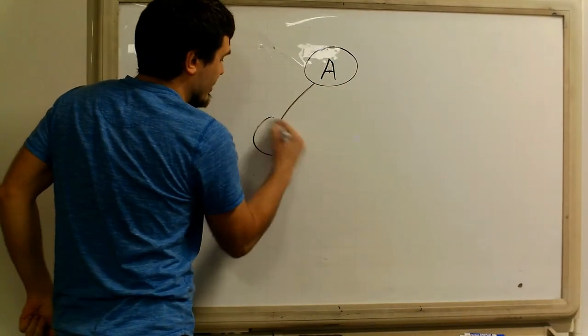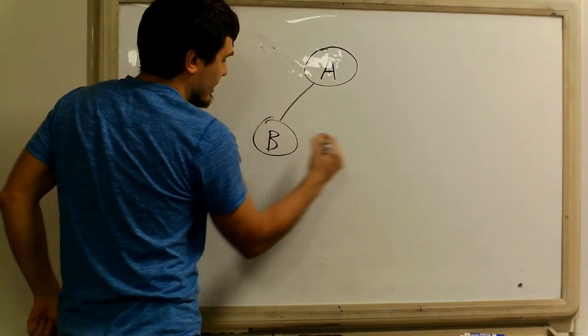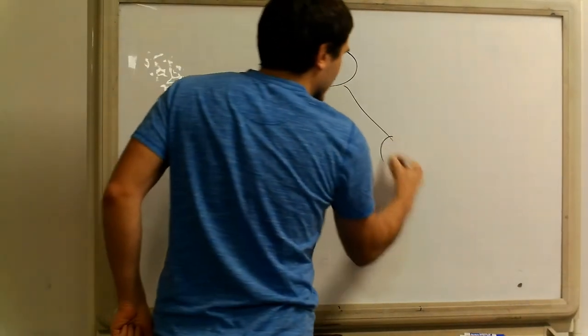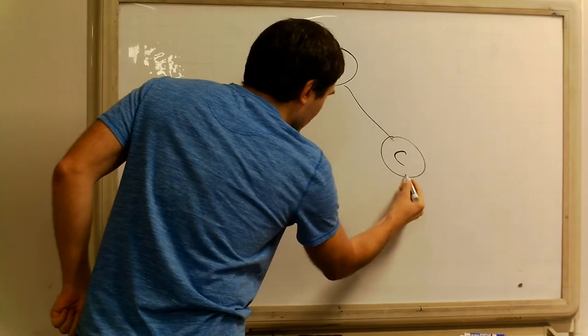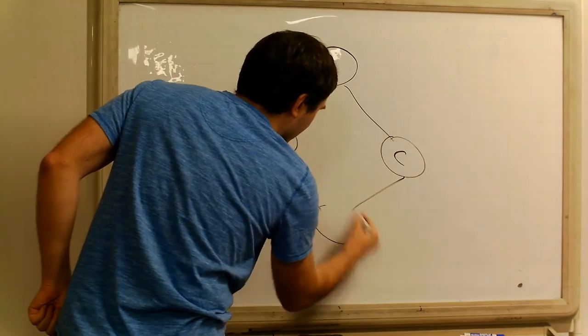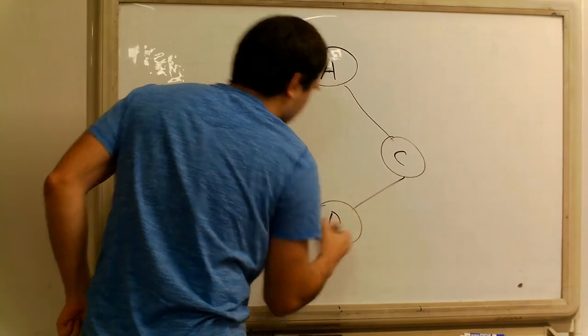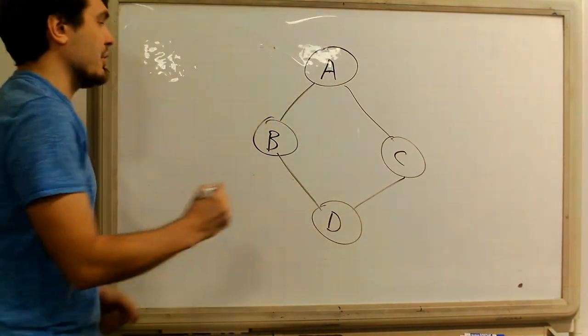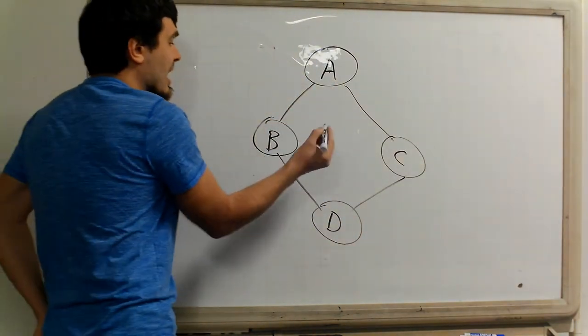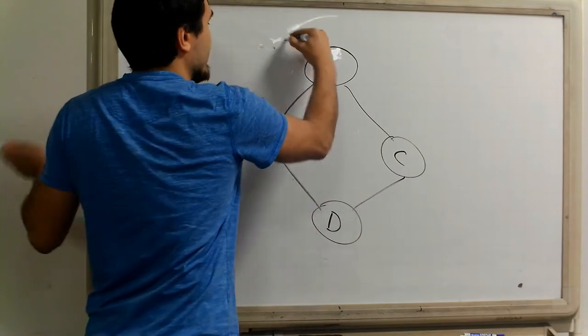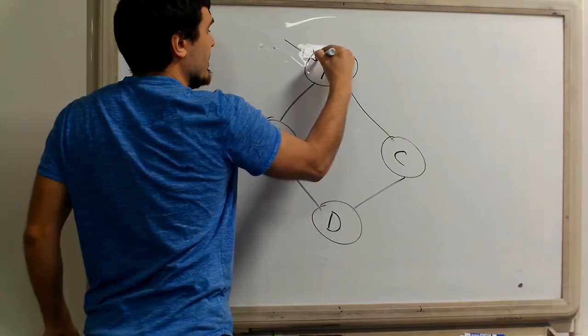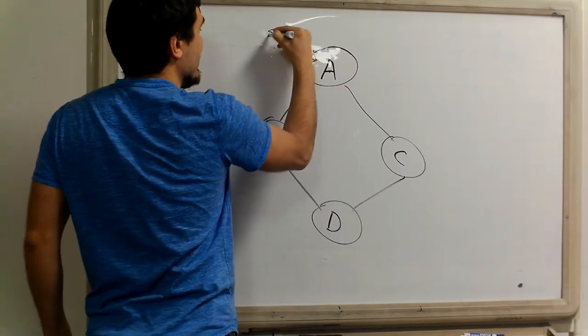So you have some nodes in the graph, like this, for example. And we want to find the best path — this is a very simple graph — we want to find the best path, let's say, from some source to some destination.